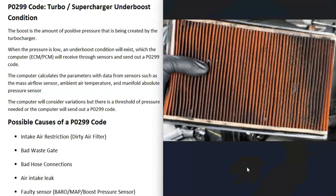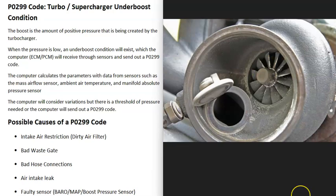One possible cause of a P0299 code is an intake air restriction, like a dirty air filter. Be sure to check your air filter and make sure it's not dirty and clogged up, because if anything is blocking the airflow going in, that's going to cause issues.